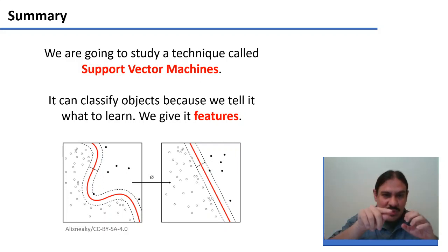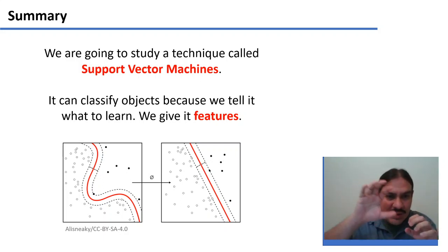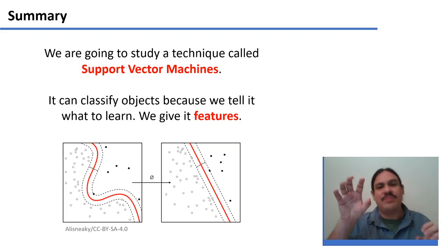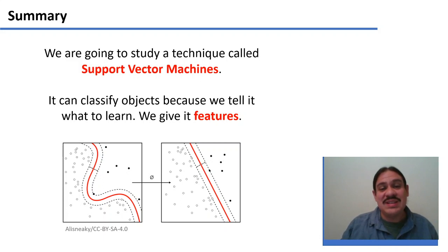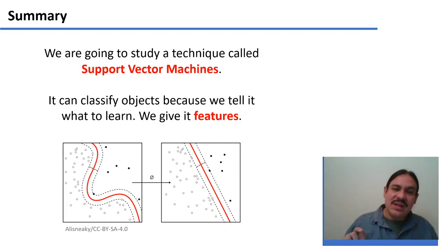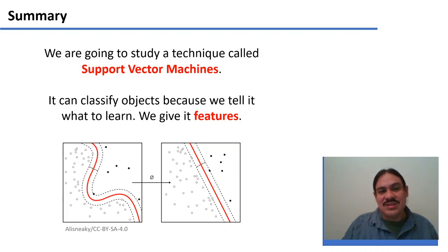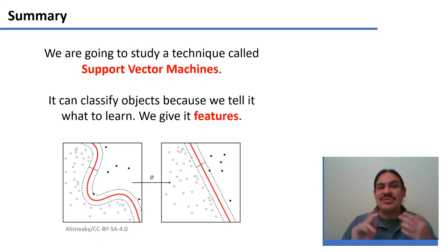For example, between the group with the dark dots and the light dots in the charts. One very neat feature of support vector machines is that it can draw lines to separate clusters, but it can also draw non-linear shapes to set the boundaries between clusters. So it is a non-linear, highly dimensional method of classification.